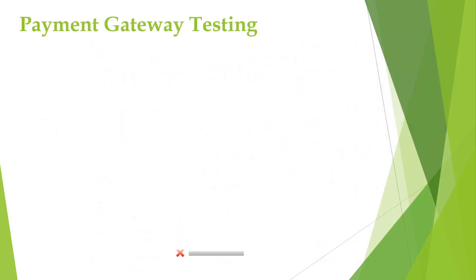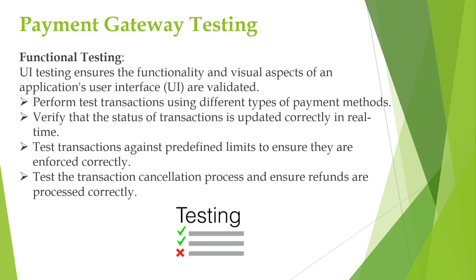Once UI testing is completed, we will proceed with the functional testing. In this functional testing we will click on each option that is available and test whether the transaction is happening correctly as per the option or not. We will test the transactions against the predefined limits to ensure that they are enforced correctly. For example, when a beneficiary account is added it should be approved by the bank. Then we will check if we are able to send to the beneficiary account within the set limit and also try to send above the limit.